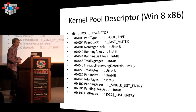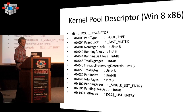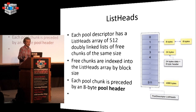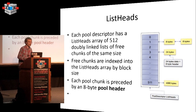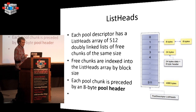Here is output from the debugger. There are a lot of fields in the pool descriptor, but the most interesting ones are list heads and pending free. List heads is an array of doubly-linked lists of free chunks of the same size — 512 entries with 8-byte granularity, storing chunks from 8 bytes up to close to page size, which is 4,080 bytes.